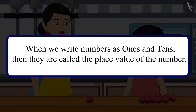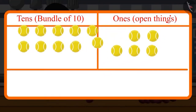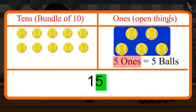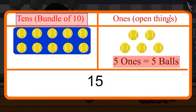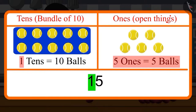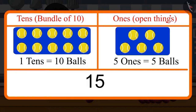So children, when we write numbers in ones and tens, we call them the place value of the numbers. For example, if I have 15 balls, then in 15 the place value of 5 is 5 ones — which means 5 balls — and the place value of 1 is tens — which means 10 balls. So the total is 15 balls.